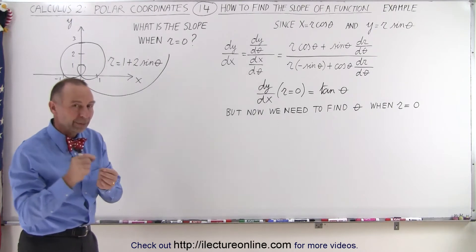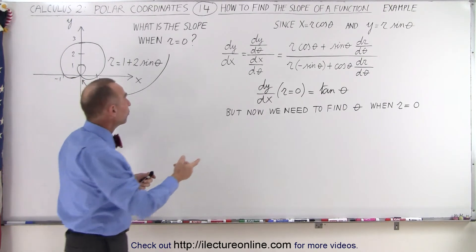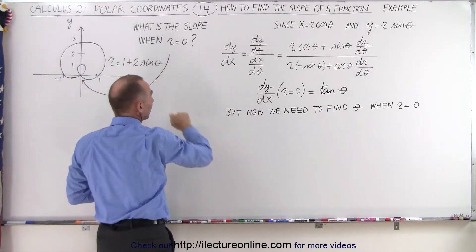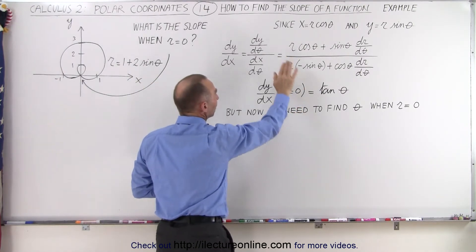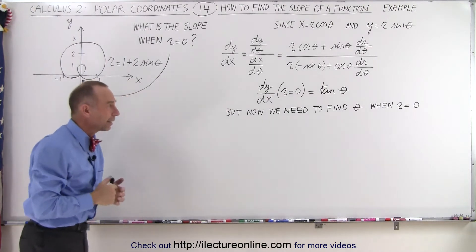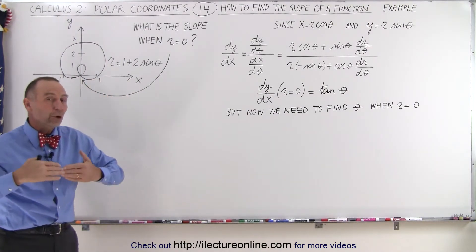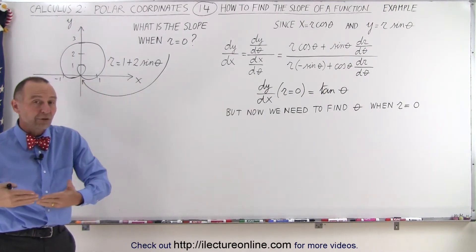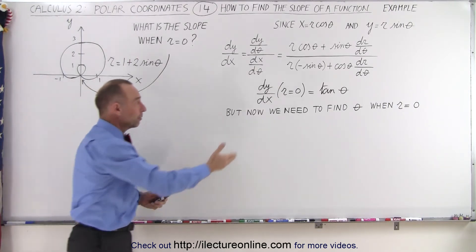Then, to find the slope for a particular condition, in this case we want to find the slope when r is equal to 0, we plug in 0 for r in this general equation and we end up with the tangent of theta. We showed you how to do that on the last video. But since we don't know what theta is when r is equal to 0, we can't solve for the slope.